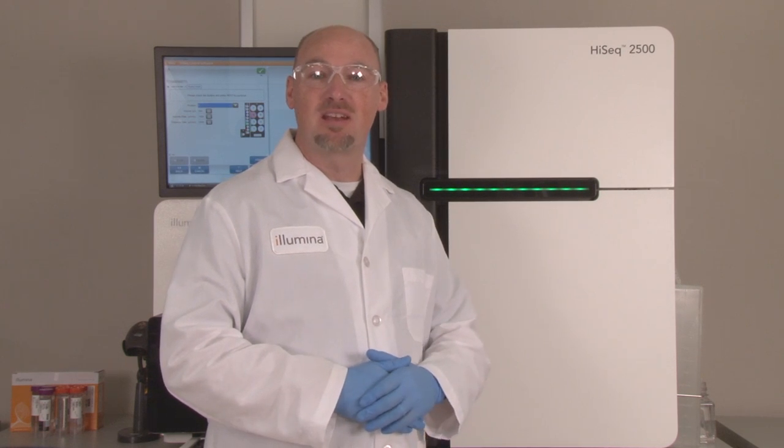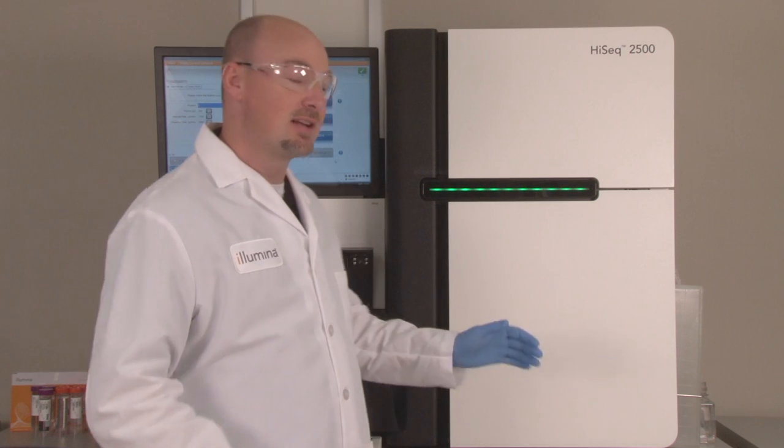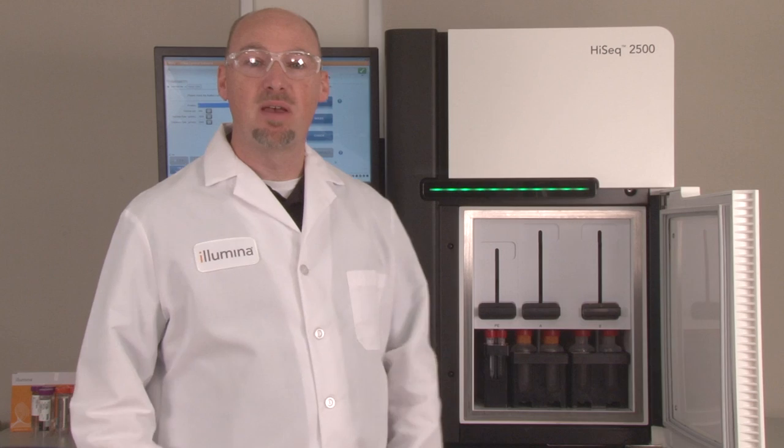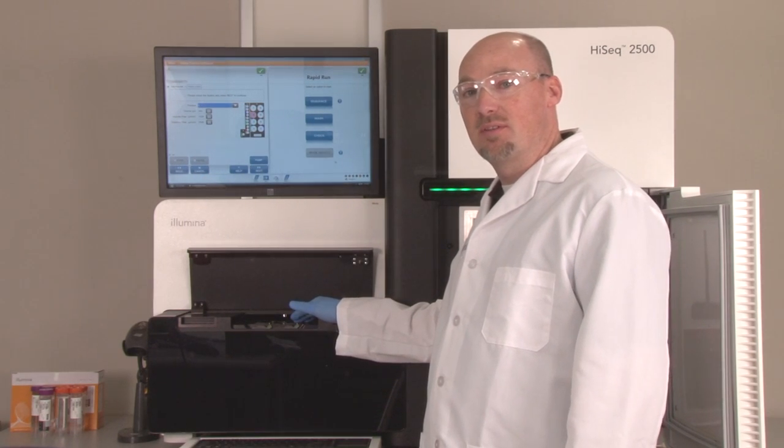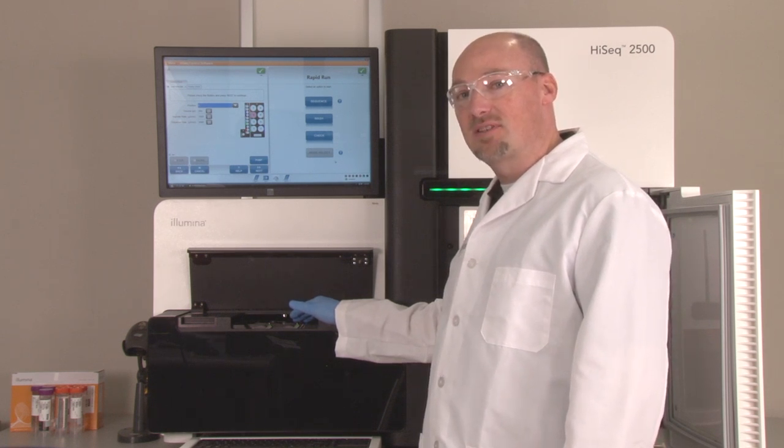The temperature for the SBS chemistry on the Hi-Seq is controlled in two locations: the chiller, which keeps the reagents cold, and the Peltiers found beneath the flow cells, which heat and cool the flow cells as needed during the SBS chemistry. Let's first take a look at the chiller.